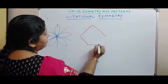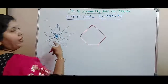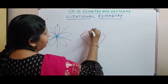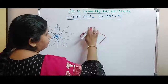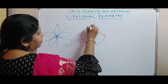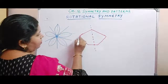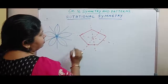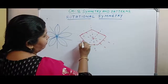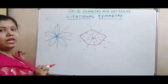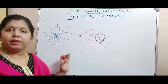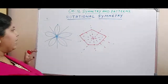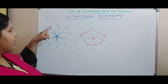Now what are the lines of symmetry for a regular pentagon? There are actually 5 lines of symmetry in a regular pentagon — one from each side to the opposite vertex. So similarly for this flower which has 5 petals, it is also having 5 lines of symmetry.